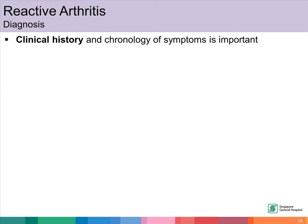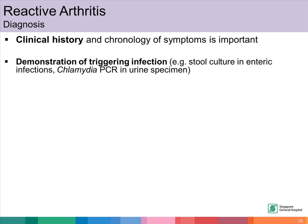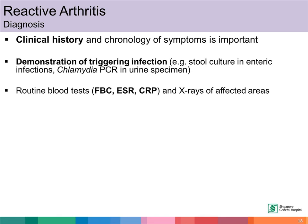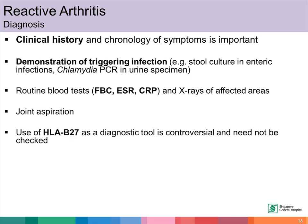Getting a good clinical history and chronology of symptoms is important in the diagnosis of reactive arthritis. Demonstration of triggering infection is also useful — for example, getting stool cultures in enteric infections and chlamydial PCR in urine specimens. Routine blood tests such as full blood count, ESR, and CRP are useful to show evidence of inflammation. X-rays of the affected joints can also be obtained. Joint aspiration is a useful modality in diagnosing reactive arthritis and excluding other differential diagnoses such as septic arthritis and crystal arthritis. Checking HLA-B27 is not always necessary and does not help in management.